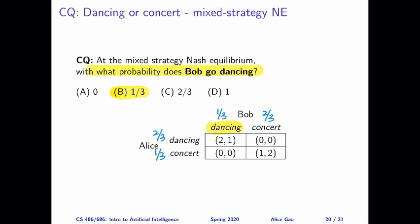This is a coordination game, except that the two players have different utilities for coordinating on the two actions. We are going to derive the mixed strategy Nash equilibrium. The correct answer is that the row player prefers taking the top action with two-thirds probability, and then the column player prefers taking the left action with one-third probability. Let's take a look at the derivation.